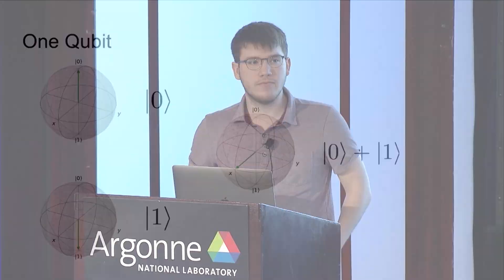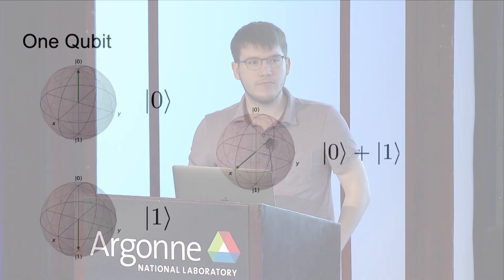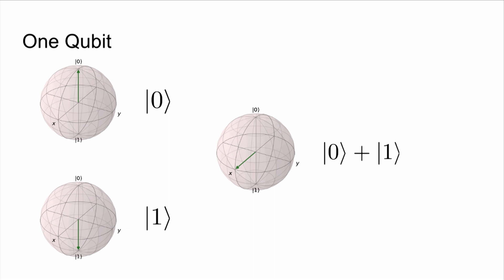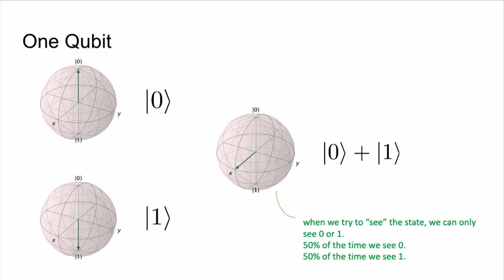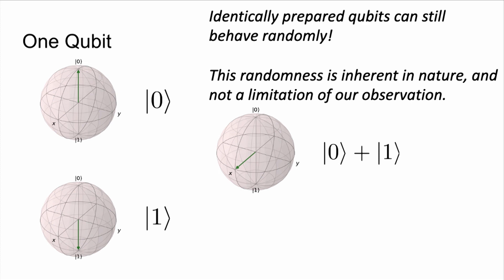Those are not the only valid quantum states — any point on the sphere is a valid quantum state for a single qubit. For example, I can have the zero plus one state, in superposition between zero and one. It's on the axis halfway between zero and one. If I prepare a thousand of these and measure them, roughly 50% will come out as zeros and 50% as ones. When we look at the state, we expect it to collapse back into one of the basis zero or one states. This is one of the most amazing things about quantum mechanics: even though I did the exact same thing to prepare that zero plus one state — a deterministic process — it can still result in a non-deterministic output. The randomness is not due to the machine; it's actually a fundamental property of nature.